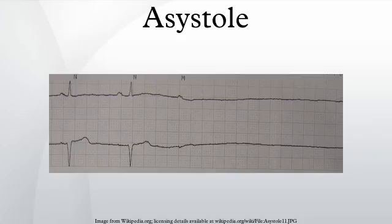Asystole may be treated with 1 mg epinephrine IV every 3–5 minutes as needed. Vasopressin 40 units IV every 3–5 minutes may be used in place of the first and/or second doses of epinephrine, but doing so does not enhance outcomes.